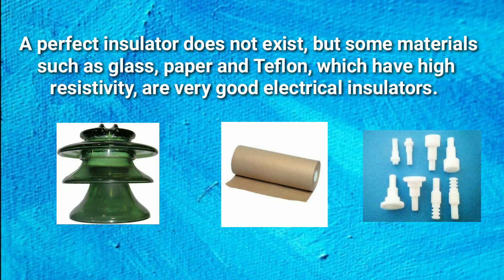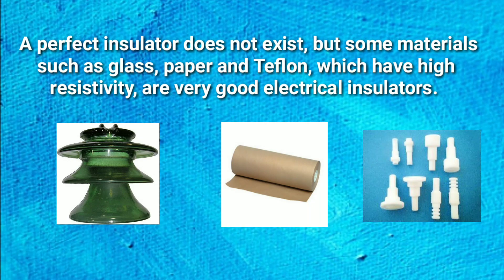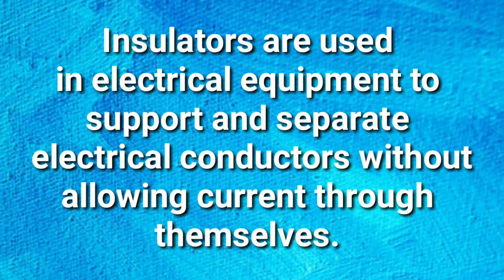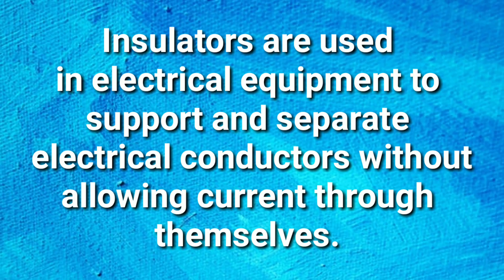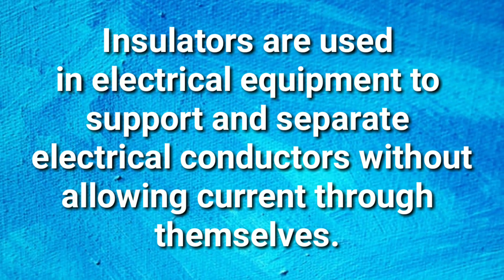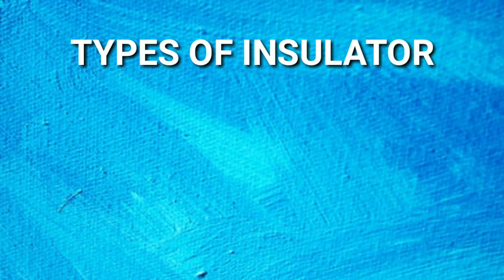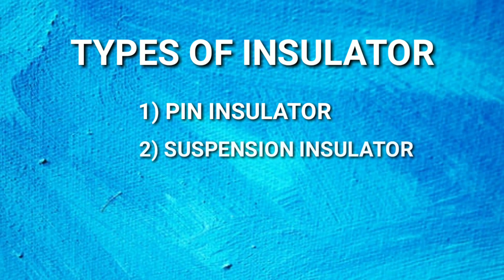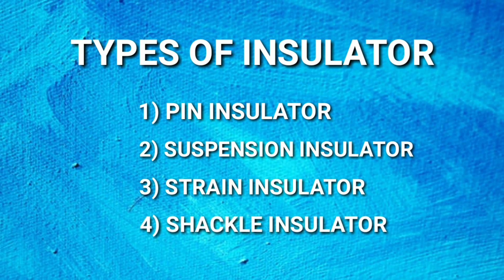paper and teflon, which have high resistivity, are very good electrical insulators. Insulators are used in electrical equipment to support and separate electrical conductors without allowing current through themselves. There are several types of insulators but the most commonly used are: pin insulator, suspension insulator, strain insulator, and shackle insulator.